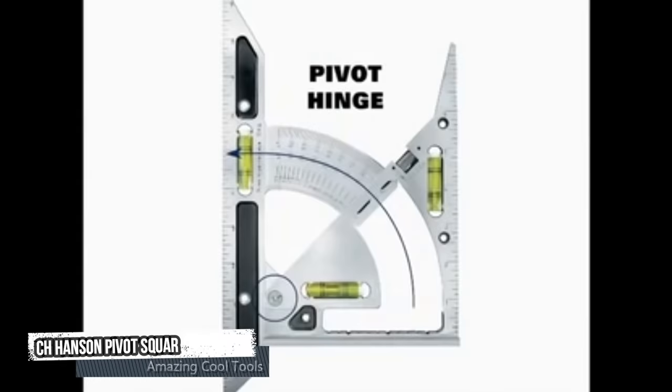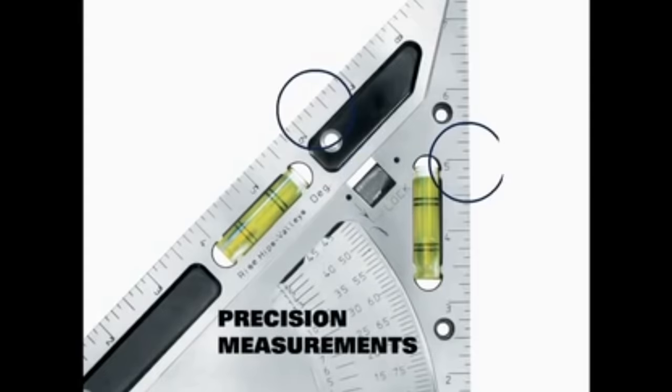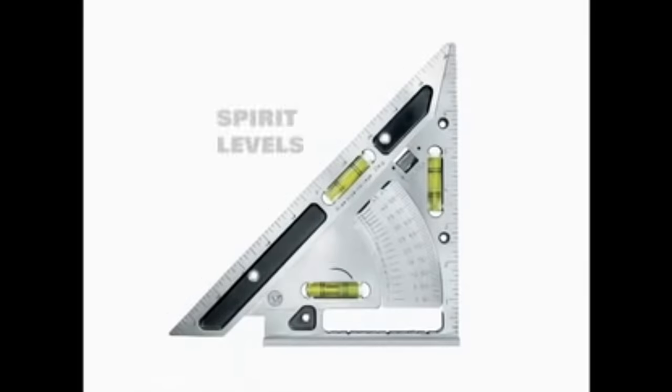The C.H. Hanson Pivot Square allows you to make more precise measurements. The angle lock allows you to simply mark boards during repetitive layout. You can use it as a common square to mark 90 degree angles.